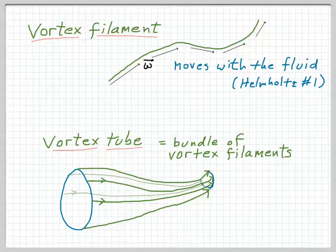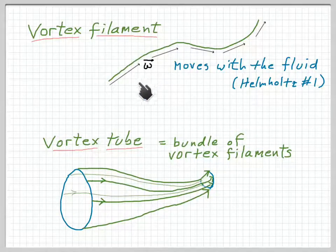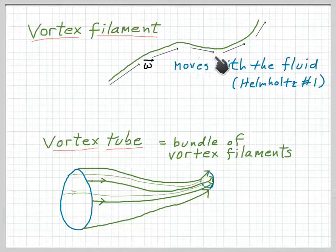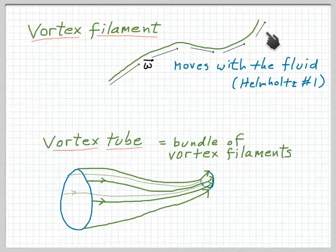Our objective here is to prove Helmholtz's second theorem. Before we begin, we have to establish a couple of definitions. The first is a vortex filament — a curve drawn through a three-dimensional moving fluid which is everywhere parallel to the vorticity field.